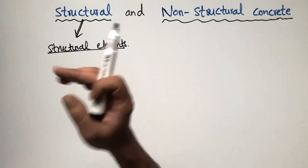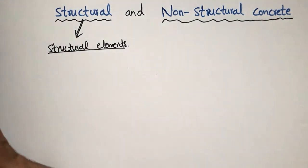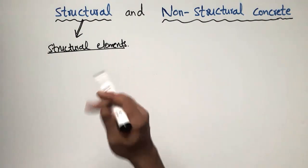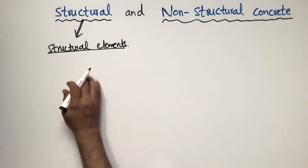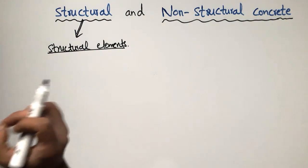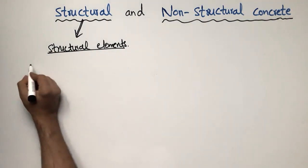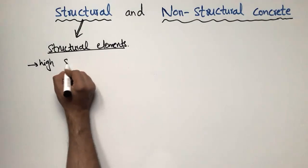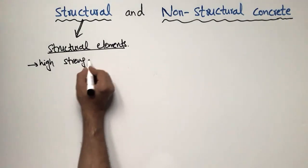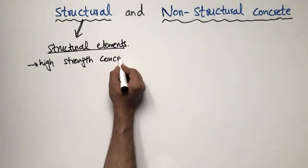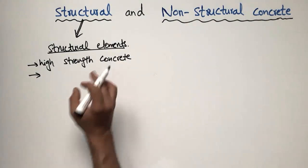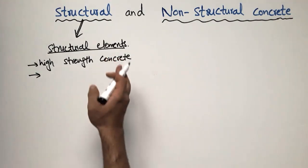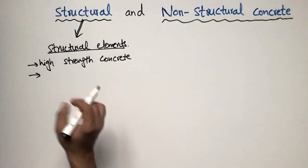The concrete used for the purpose of taking and transferring load is called structural concrete. It is designed for load-bearing purposes, and structural concrete will always be high-strength concrete — or at minimum normal-strength concrete — because it is supposed to take the load.